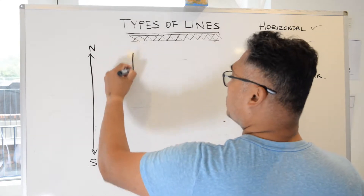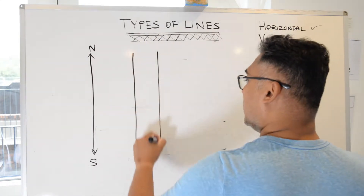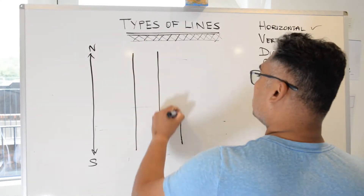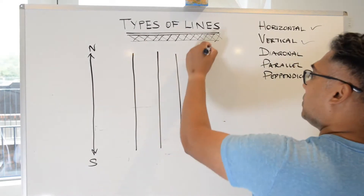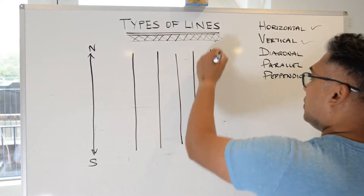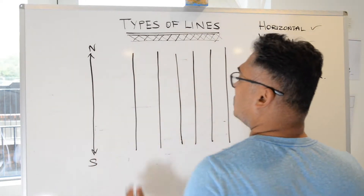Some people say from top to bottom. So vertical lines, whichever direction you decide to draw them — top to bottom or north to south — those are vertical lines.